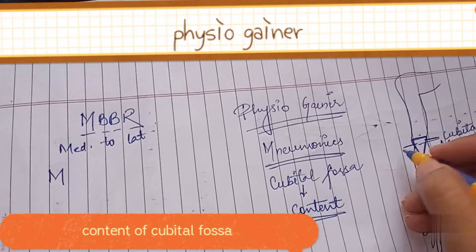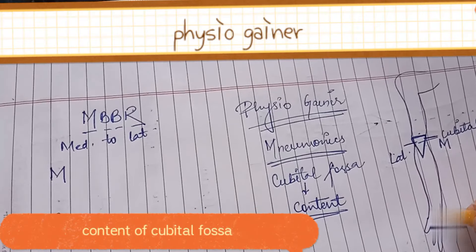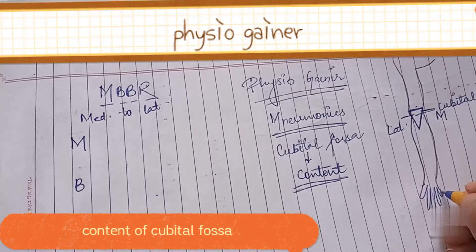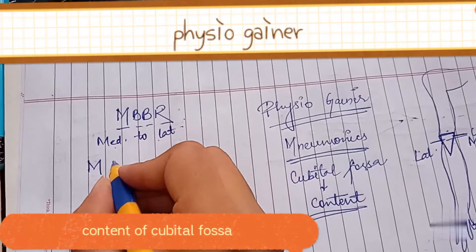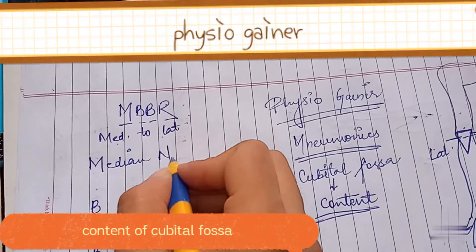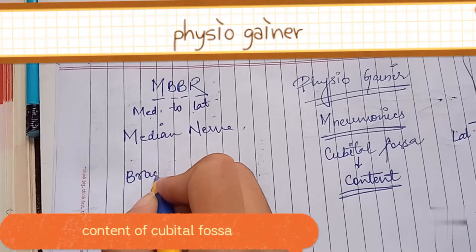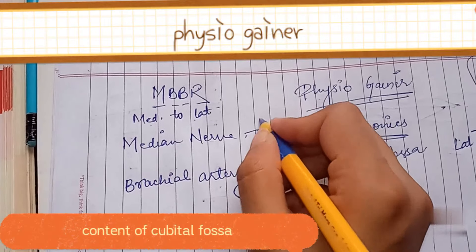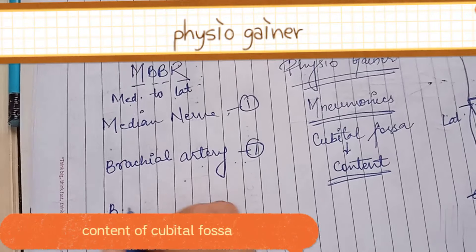Medial is the inner one, outer one is lateral. This is the ulnar side, this is the radial side. So medial to lateral — M stands for median nerve. One nerve, one artery — brachial artery.